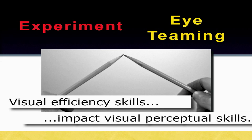Remember, the visual efficiency skills are the foundation for all other visual skills. In this case, the visual efficiency skill of eye teaming altered your depth perception, and then you couldn't perform the perceptual skill of eye-hand coordination.